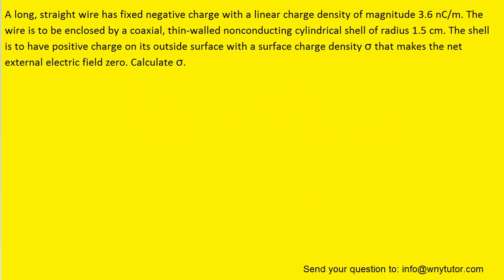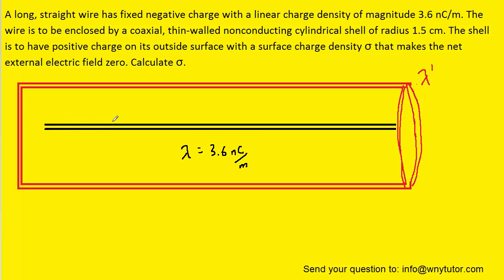If you haven't done so yet, please pause the video and attempt to solve the question before listening on. So in black we have a long straight wire that has a fixed negative charge.